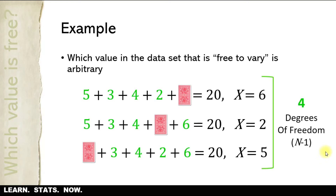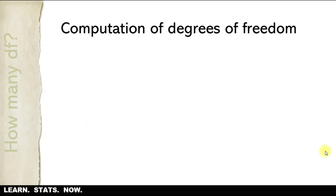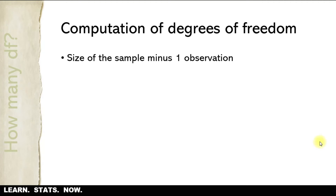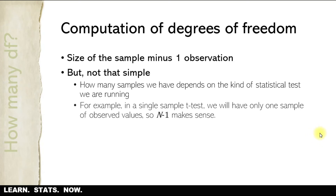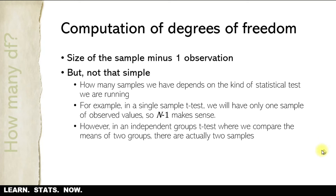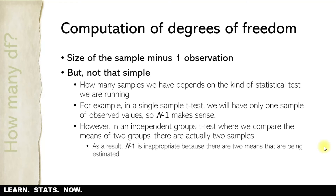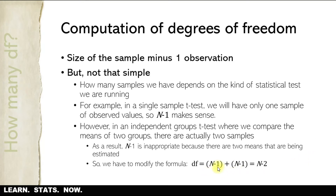The computation of degrees of freedom is straightforward as a general rule: it's the size of our sample minus one observation. However, it's not that simple because how many samples we have depends on the kind of statistical test we're running. In a single sample t-test we have one sample, so n minus one makes sense. But in an independent groups t-test — comparing the means of two groups — there are two samples, so n minus one is not appropriate. We have to modify the formula, essentially adding together the degrees of freedom for each of the two samples.